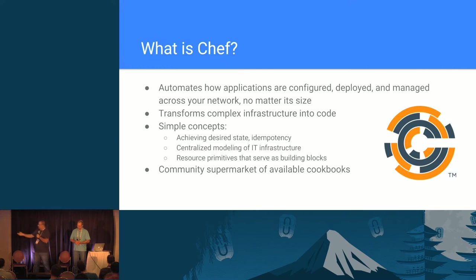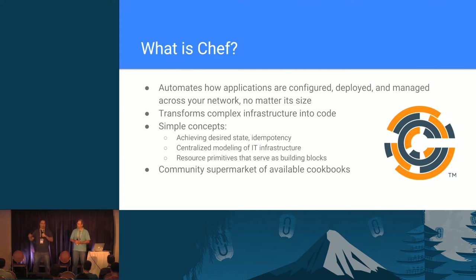As you can read, it automates how applications are configured, deployed, and managed across your network no matter the size. The advantage Chef has over a lot of other configuration management systems is that the Chef client runs on the compute node instead of on a centralized server. So you don't need to expand your master of puppets to handle the workload.